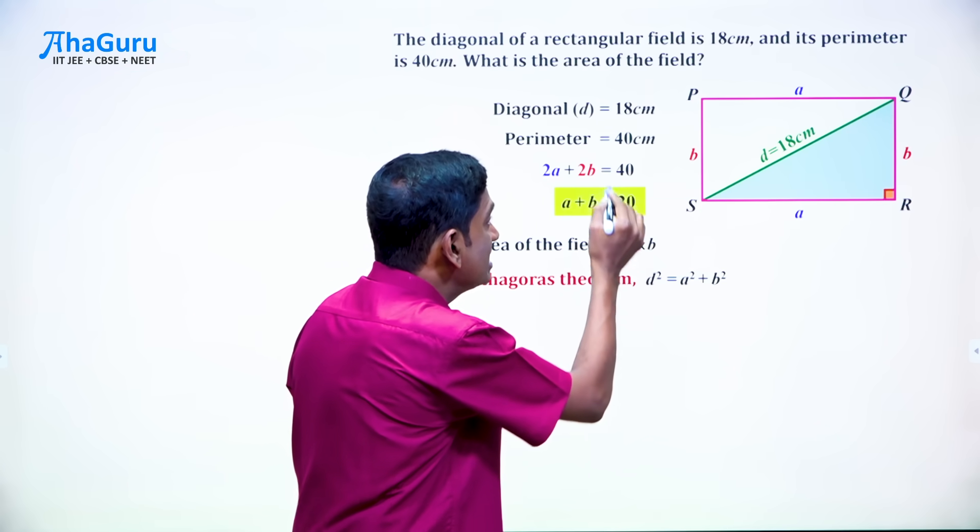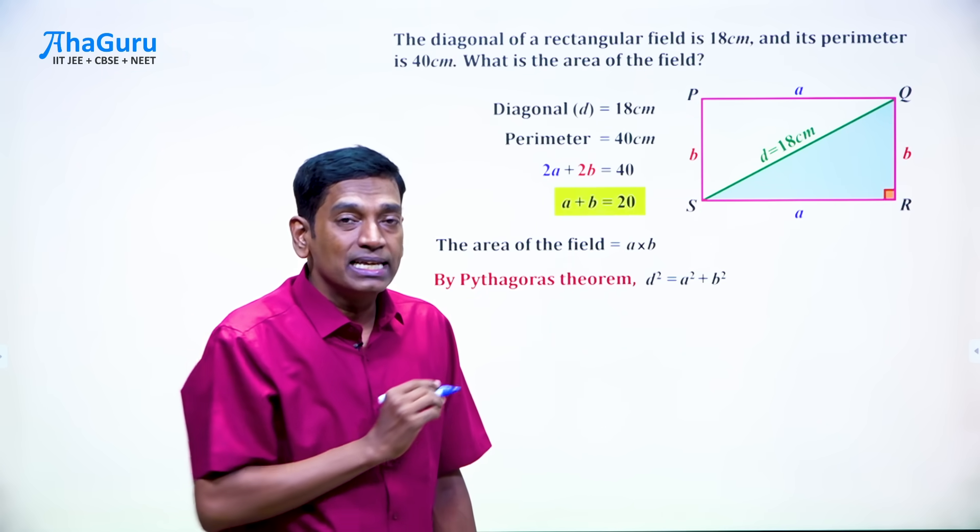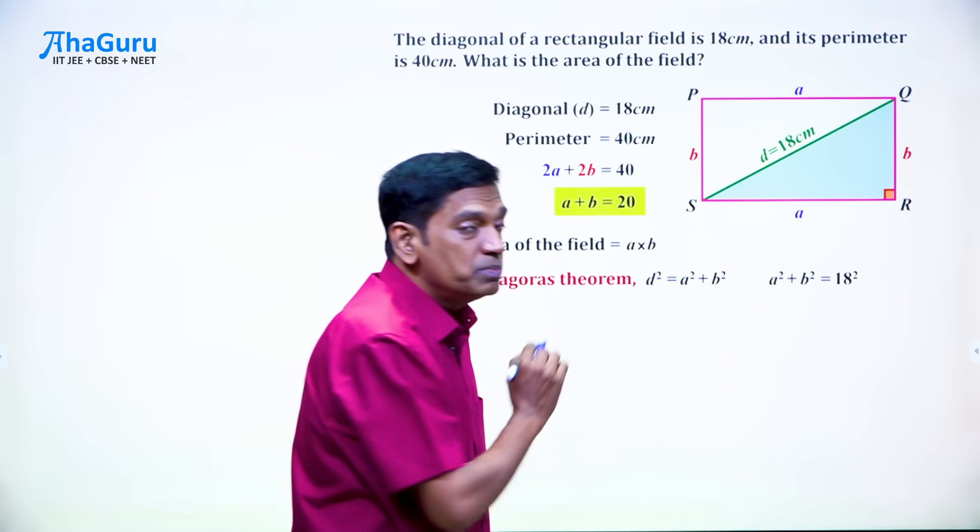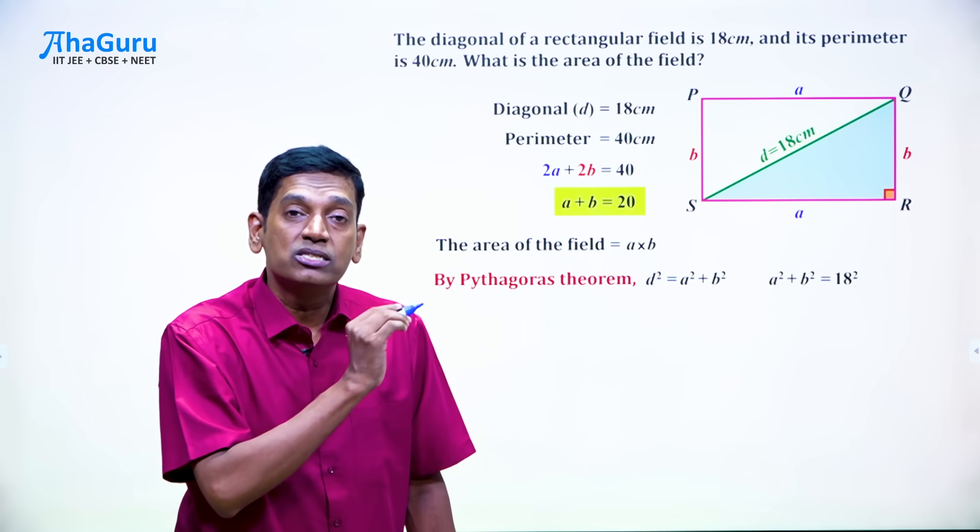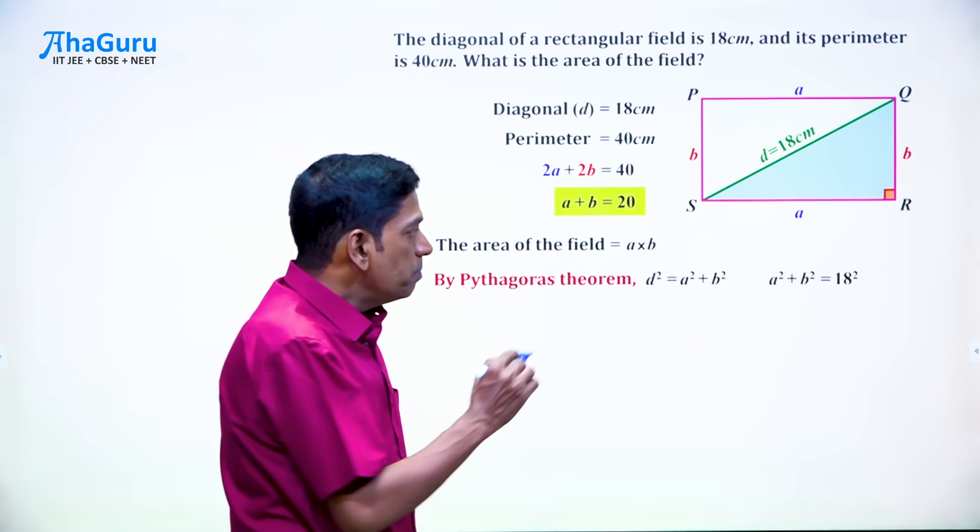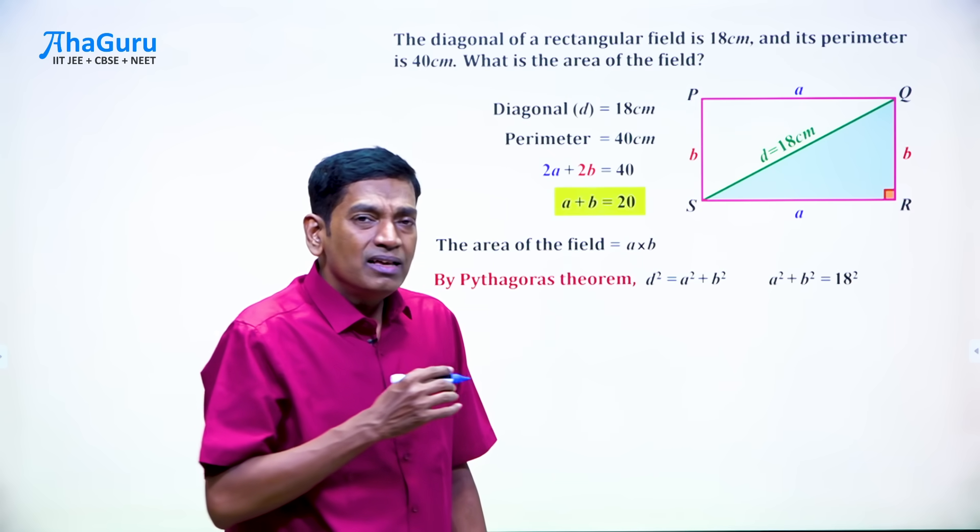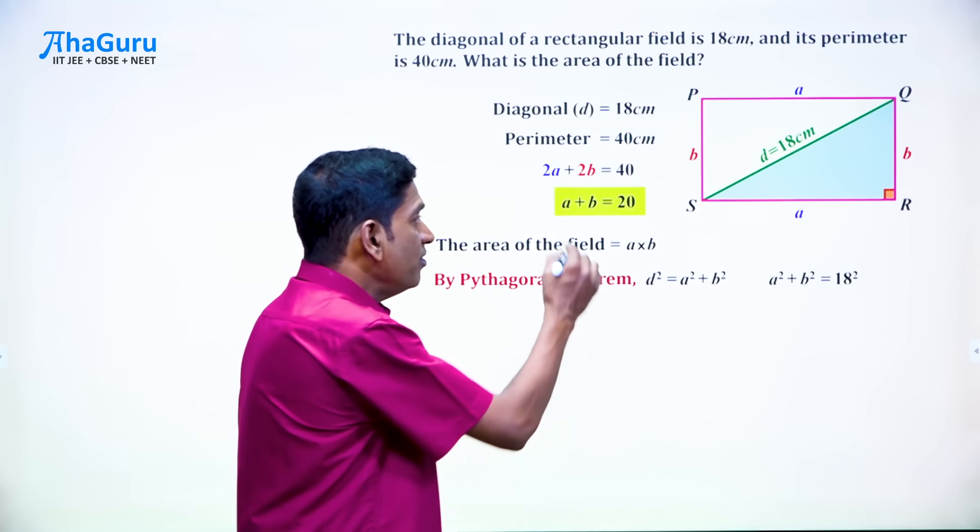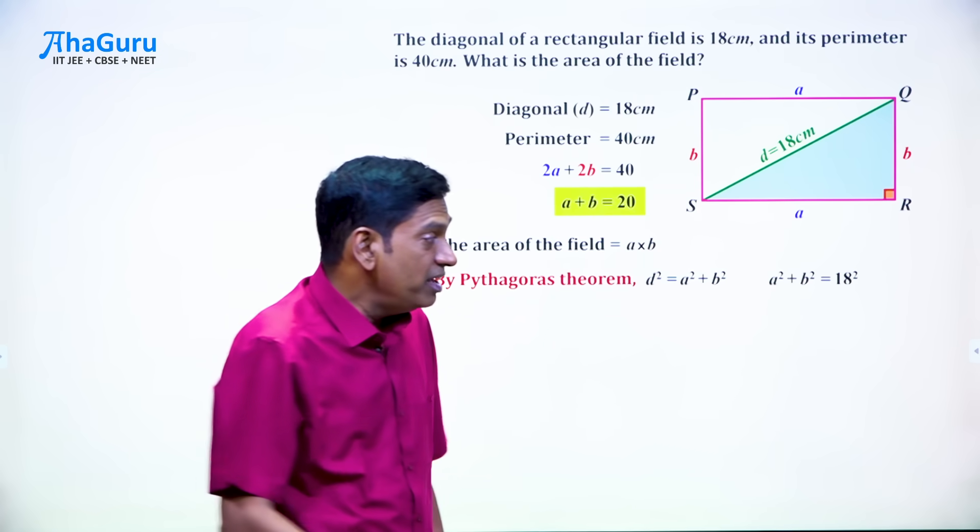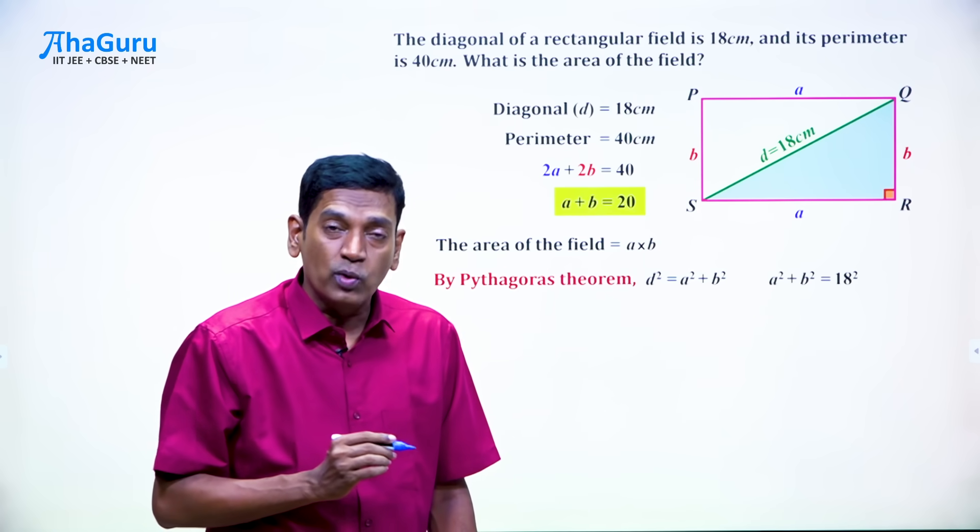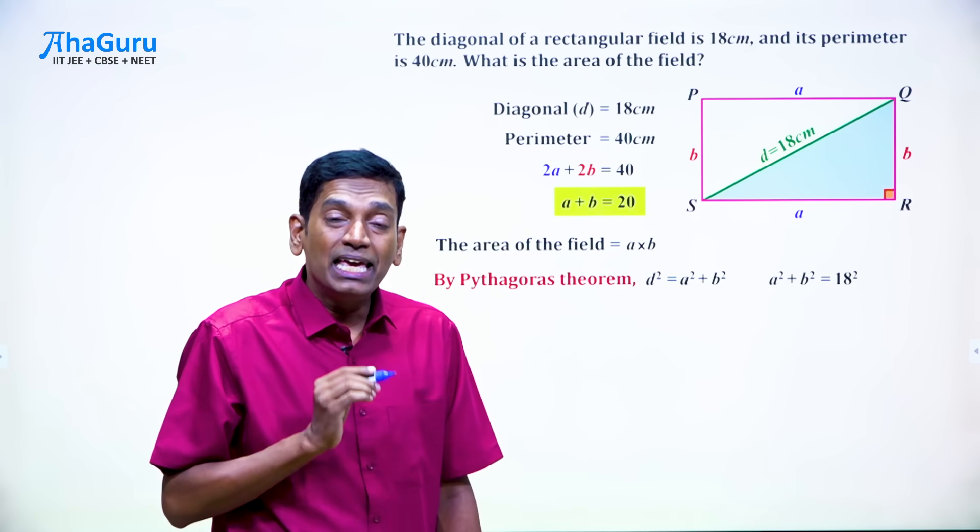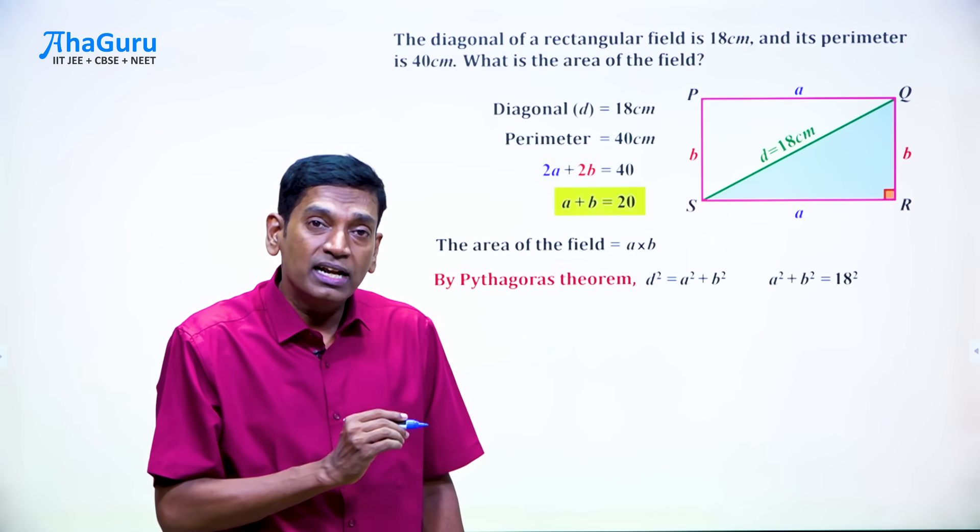Now D is given to us as 18 centimeter. That means we can say A square plus B square is 18 square. But still we are nowhere near having the values of A and B. We have A plus B and we have A square plus B square as 18 square. But what we need is actually A times B. How do we find that?